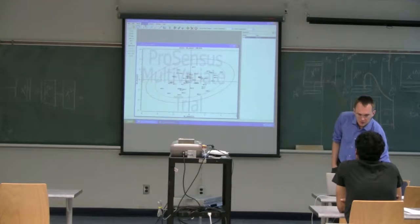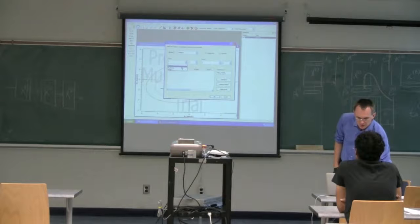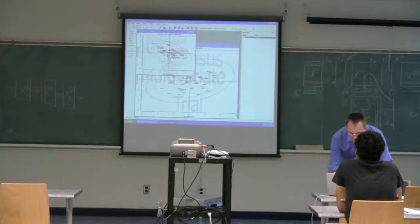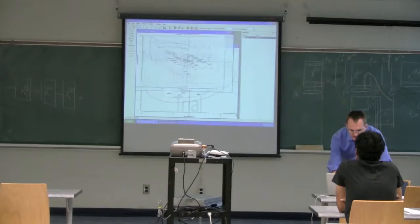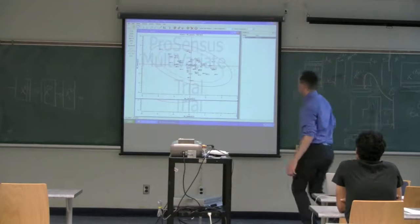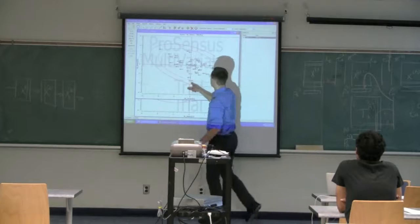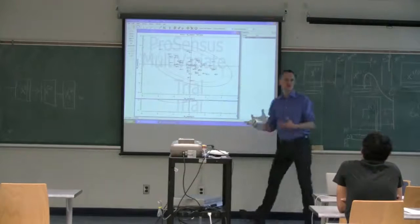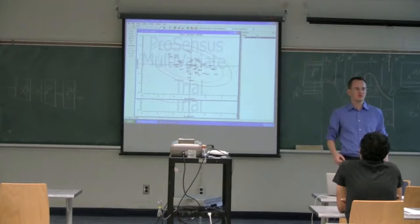We can also take a look at the score plot for the second block, the second zone. Its tilt is in a slightly different direction. There are only one or two observations outside the 95% limit, but nothing that I would go investigate.